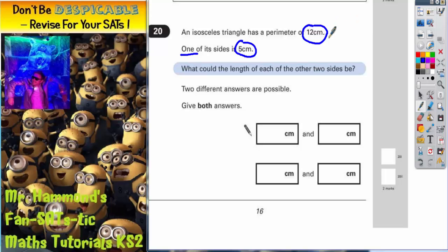An isosceles triangle has two sides the same and one side different. Now that will help us in a moment.